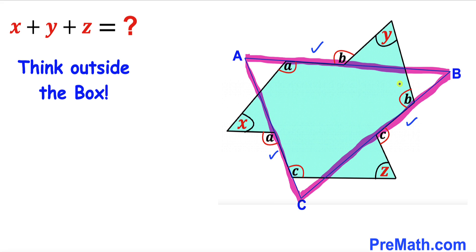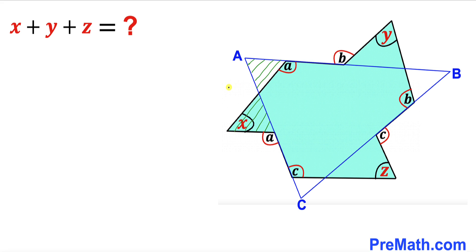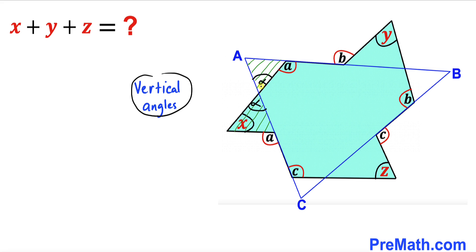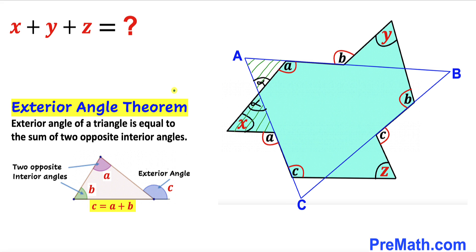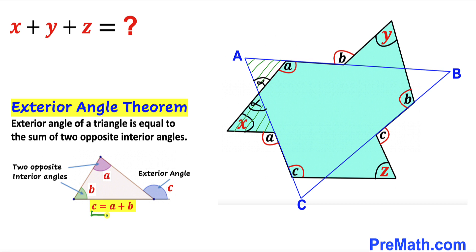As a result, we ended up with triangle A, B, C. Now let's focus on these triangles. Go ahead and call this angle alpha. Then this angle has got to be alpha as well, since these are vertical angles and they are congruent. Now let's recall the exterior angle theorem.